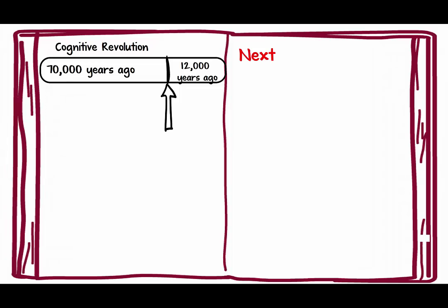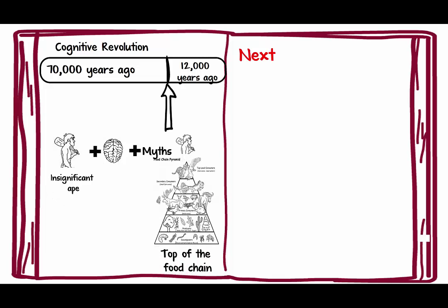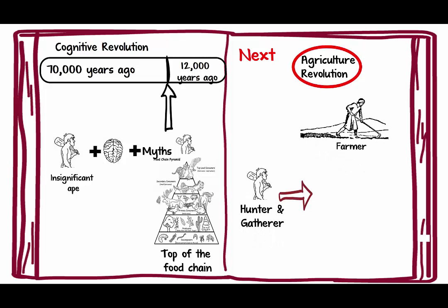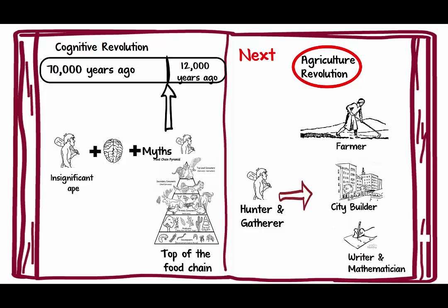That's where he stops as far as the cognitive revolution goes. An insignificant ape added a big brain plus myths, and that took him to the top of the food chain. The agricultural revolution is all about how the hunter-gatherer morphs into a farmer, into a city builder, and into a writer and mathematician. We'll be talking about those next.